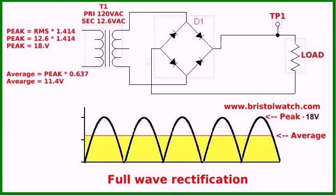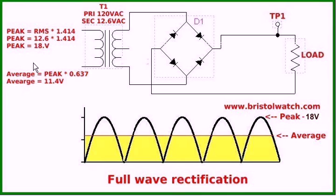Now we're going to be looking at full-wave rectification. The reason this is called full-wave rectification is I'm getting to utilize both of the half cycles. I don't have this half-cycle wide gap or valley in the system. This is achieved by the diode bridge construction. This diode and that diode will conduct on one half cycle, and this diode and that diode will conduct on the other half cycle. This has a great advantage of giving us much more power output. Your peak formulas are exactly as before, but average now — that is DC average — is peak times 0.637.